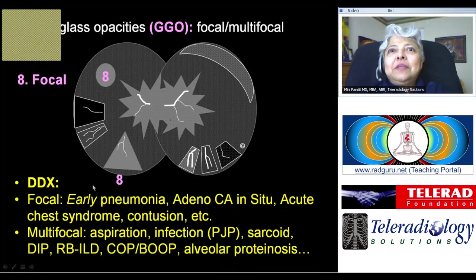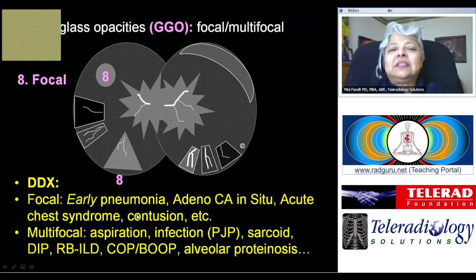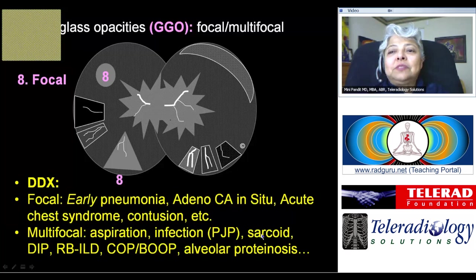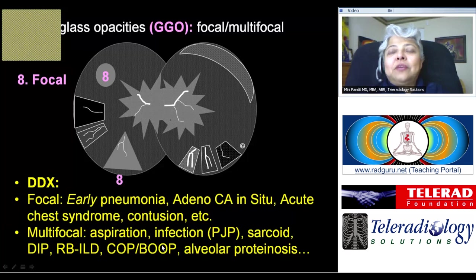Coming to multifocal ground glass opacities — again a very nonspecific finding. It can be seen in early pneumonia, multilobar pneumonia, adenocarcinoma in situ (previously bronchioloalveolar carcinoma), acute chest syndrome with sickle cell disease, pulmonary trauma and contusion, aspiration, pneumocystis infection, sarcoidosis (particularly alveolar sarcoidosis), all airways disease examples I showed — associated with ground glass opacities — and then cryptogenic organizing pneumonia (previously BOOP) and alveolar proteinosis.